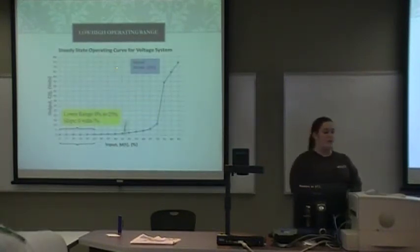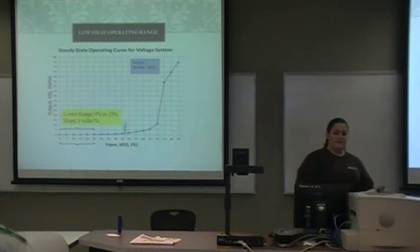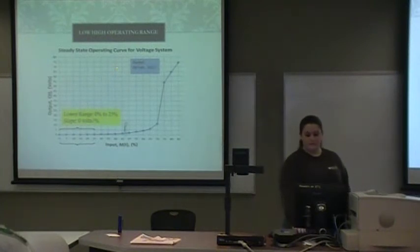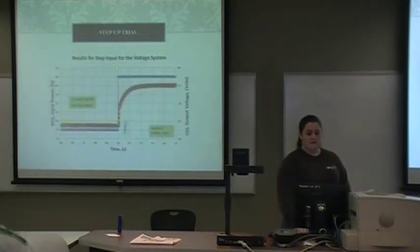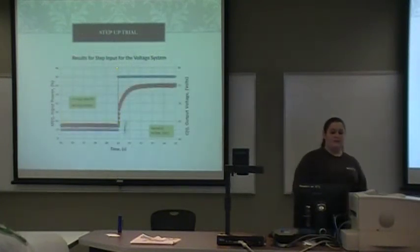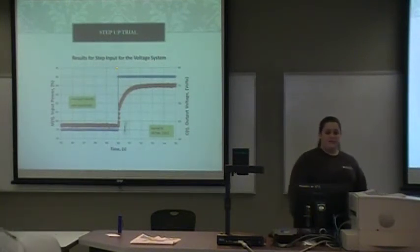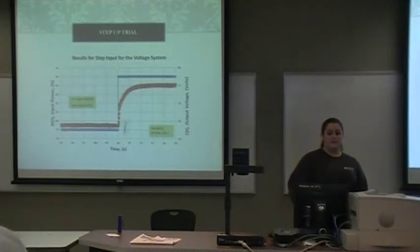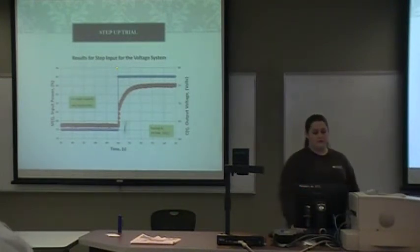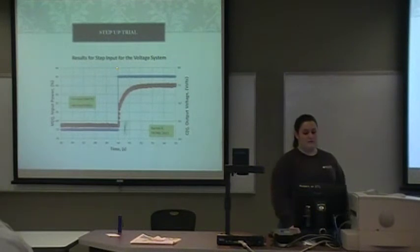The lower range is from 0 to 25, and it has a slope of 0 volts per percent input. This is a sample of our step input for our voltage system. The input was 79%, then stepped up to 77%, then gained back to 79%, and then jumped to 75 volts.